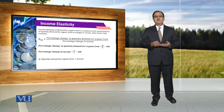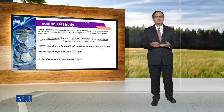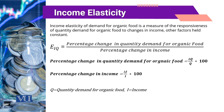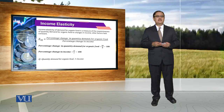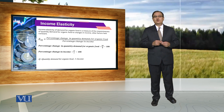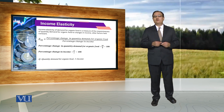For the computation of the percentage change in quantity demanded for organic food, in the slide we are denoting it as delta Q over Q. Here, delta Q indicates the change in quantity between two points, while Q in the denominator is the point of reference against which we want to compute the percentage change in quantity demanded. Similarly, the percentage change in income will be denoted as delta I over I.